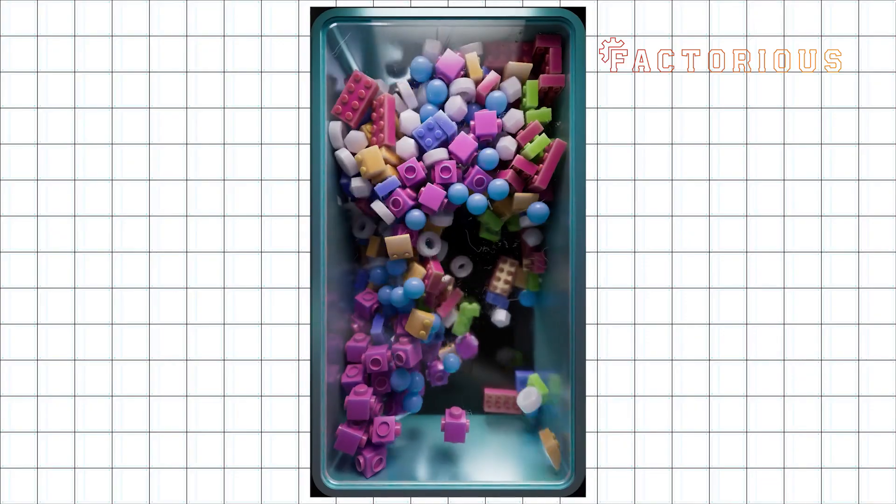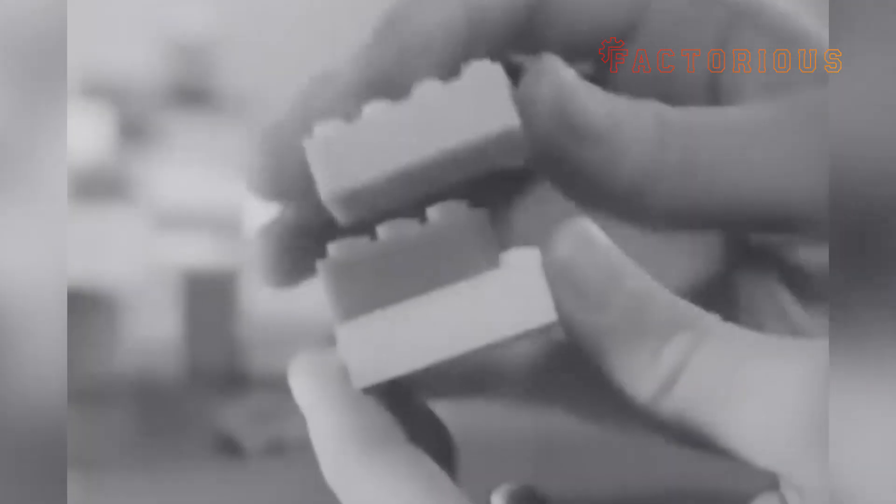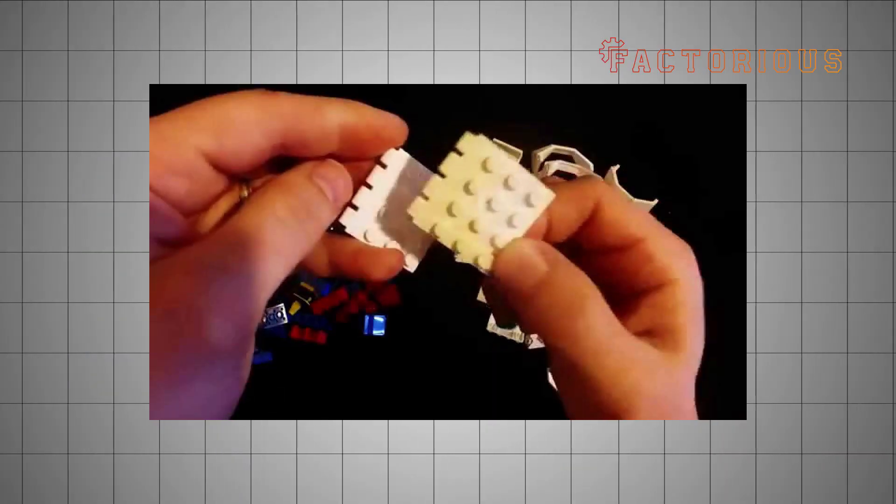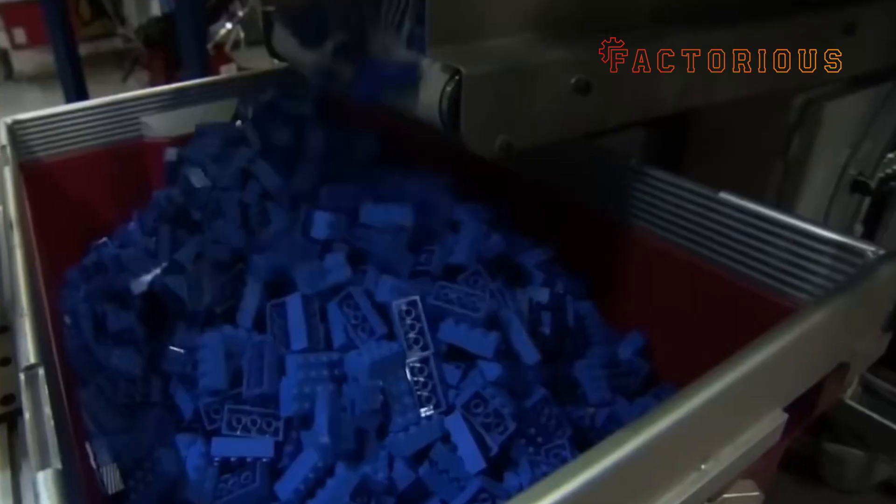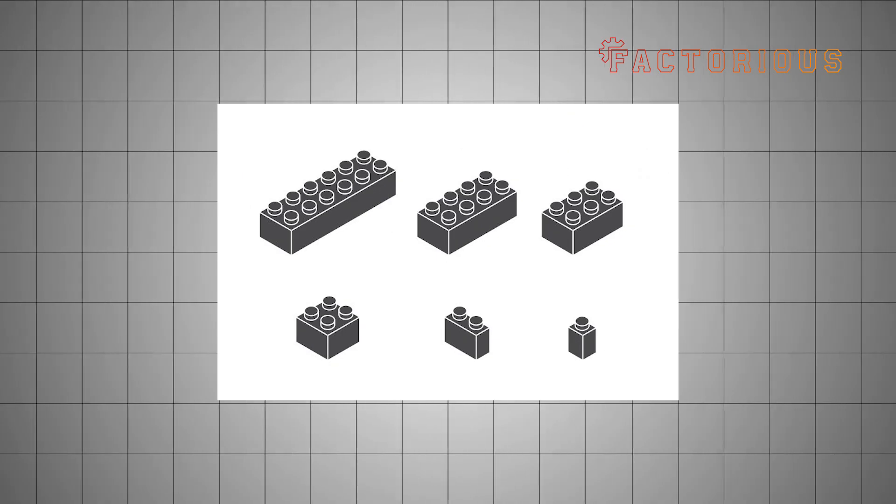Here's another cool fact. Lego didn't always use ABS. In the 1950s, the earliest Lego bricks were made from cellulose acetate, which tended to warp and discolor over time. By 1963, Lego switched to ABS, and they've stuck with it ever since.